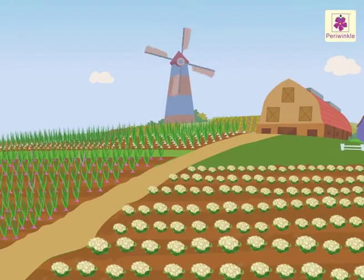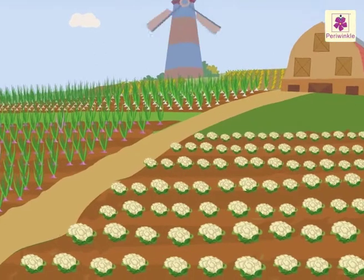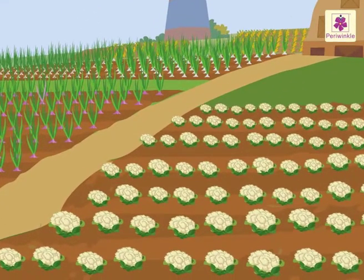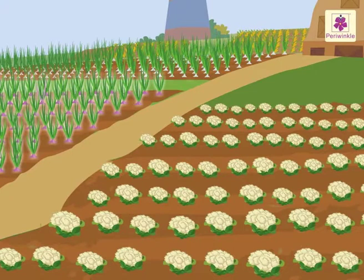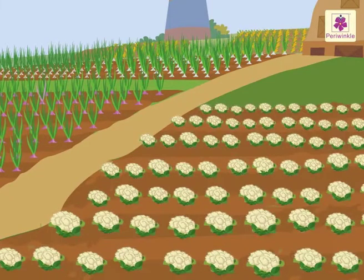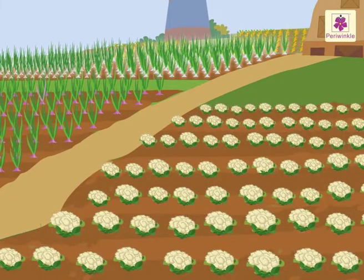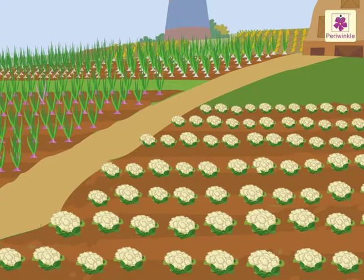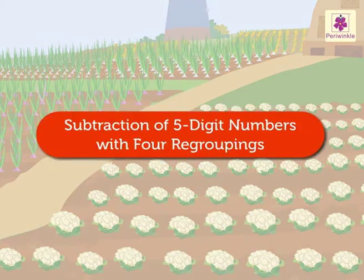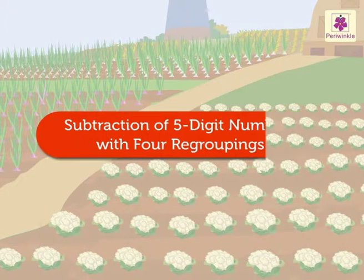Hey friends, now we are at a vegetable farm. There are so many onions, cauliflowers and spring onions here. It will be fun to learn the subtraction of 5-digit numbers with 4 regroupings here.